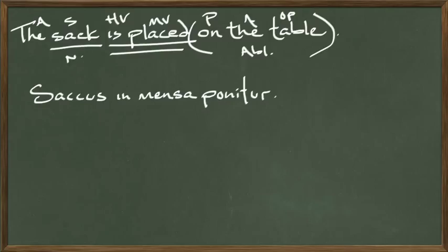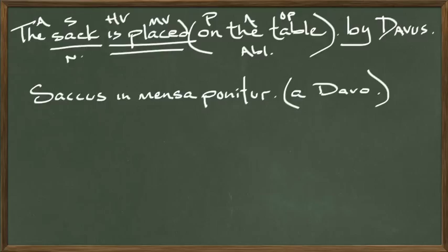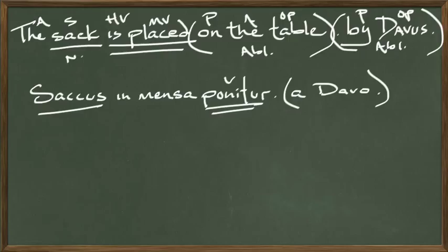I know the character doing it is Davus, so if we wanted to add an agent: 'The sack is placed on the table by Davus' — saccus in mensa ponitur a Davo. 'By' is a preposition, Davus is the object of the preposition, so it's in the ablative case. Or just: saccus in mensa ponitur. The sack is the subject; ponitur is the verb — it's passive. Also, it ends with -ur, another helpful clue in Latin that a verb is passive.